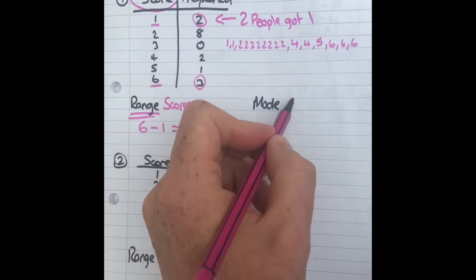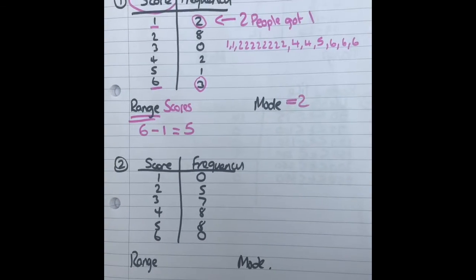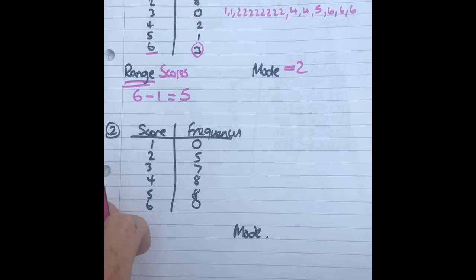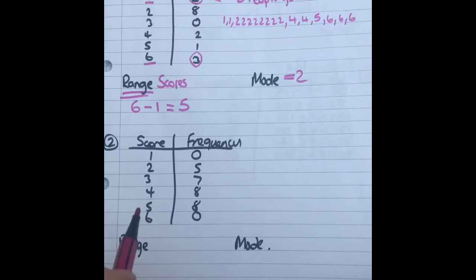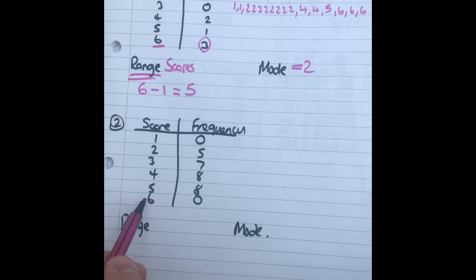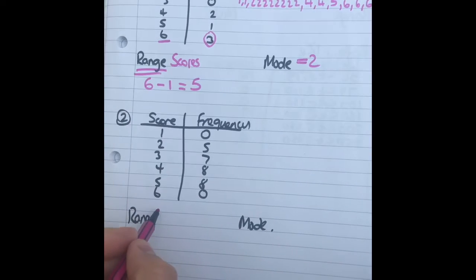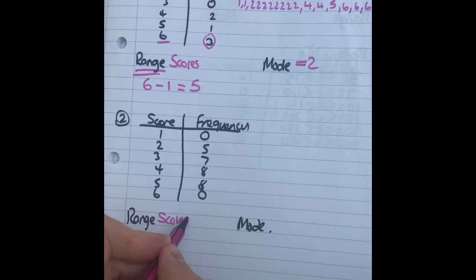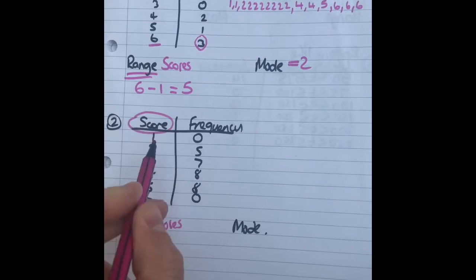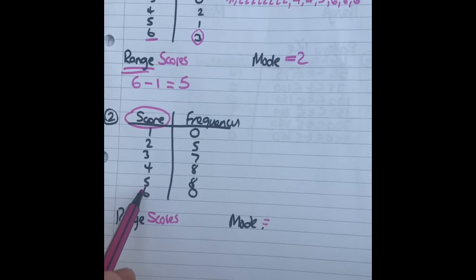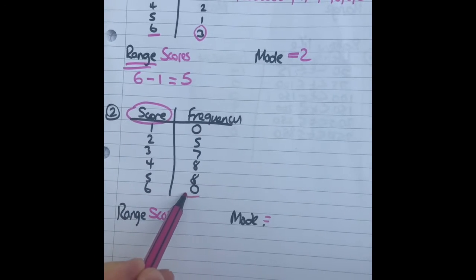Question two. Similarly to question one, the range is the difference between the biggest and the lowest. And remember it's the scores, it's always the first column you're looking for when you're dealing with the range and mode.